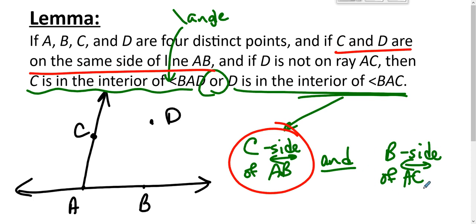So we assumed that C was not in the interior of angle BAD. If C were in the interior of angle BAD—now let's draw the scenario. Here's angle BAD.